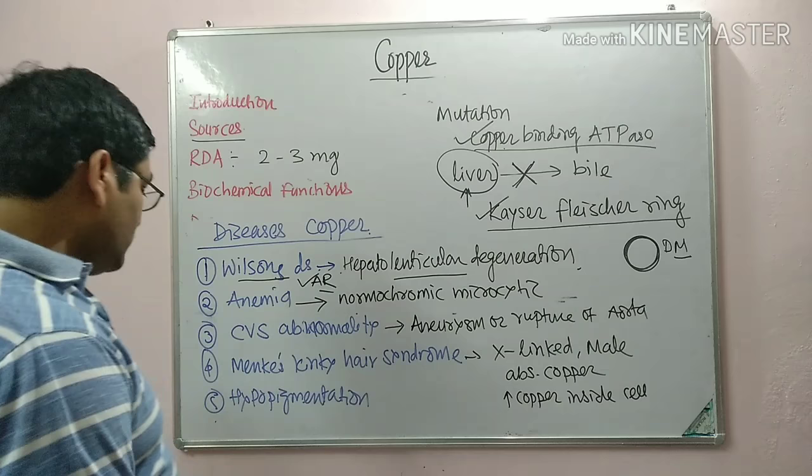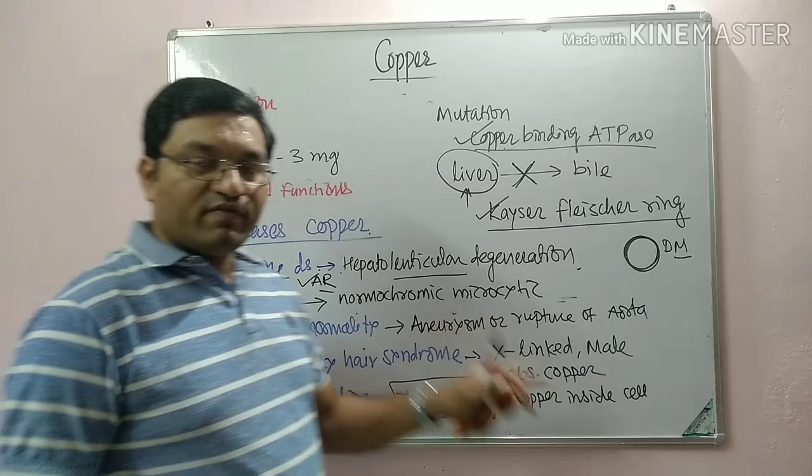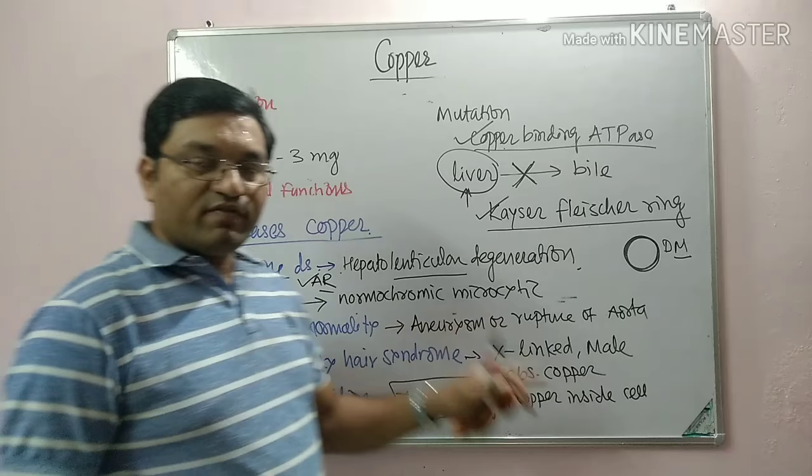Hypopigmentation occurs due to a defect in tyrosinase, as tyrosinase contains copper. These are the deficiency manifestations and disease states related to copper.